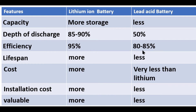During the charging cycle, there is some chemical reaction. So while charging the lead-acid battery, 15 to 20 percent of the voltage can be dissipated, making it less efficient than lithium-ion.